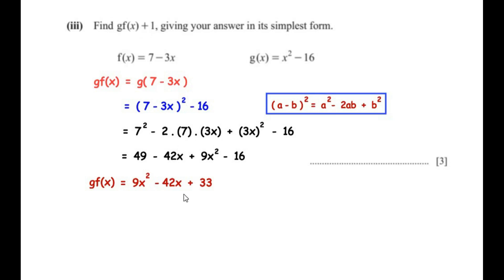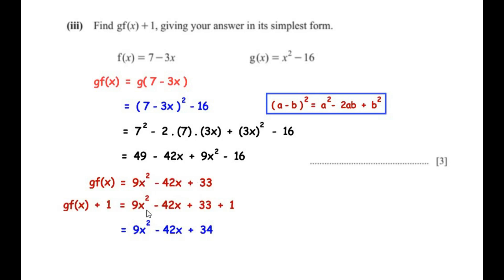So g(f(x)) plus 1: we have 9x squared minus 42x plus 33, and adding 1 gives 9x squared minus 42x plus 34. This is the simplest form in which we can write g(f(x)) plus 1.